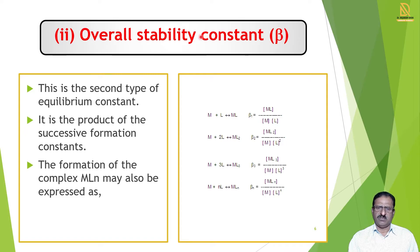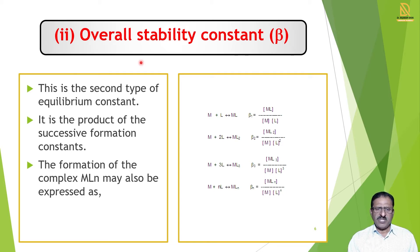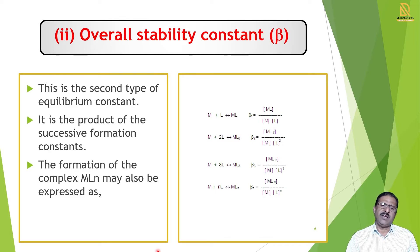Now we see the overall stability constant. The overall stability constant is shown by the notation beta (β). In the overall stability constant, we take the metal and add the required number of ligands all at once — if one ligand is necessary, we add one; if five are required, we add all five directly. This is analogous to adding the whole volume at once in a titration, rather than dropwise.